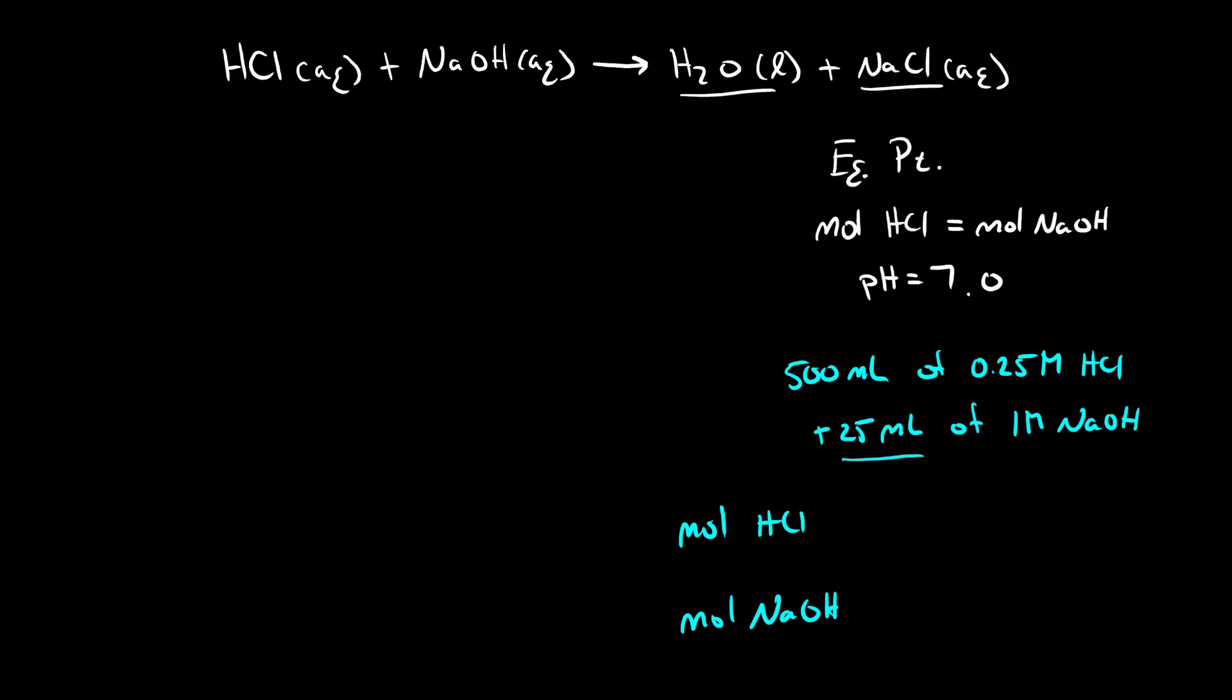We're going to do this using the volume and the molarity. 500 milliliters is 0.5 liters so we have 0.5 liters of our hydrochloric acid and its concentration is 0.25 moles per liter.